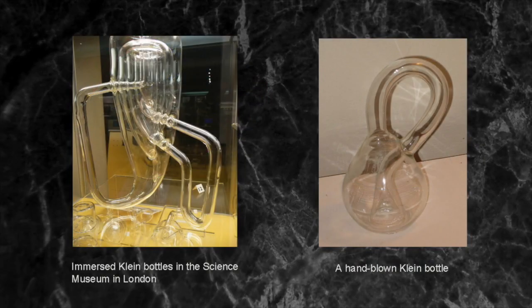A three-dimensional glass model of a Klein bottle can be made by stretching the neck of a bottle through its side and joining its end to a hole in the base.